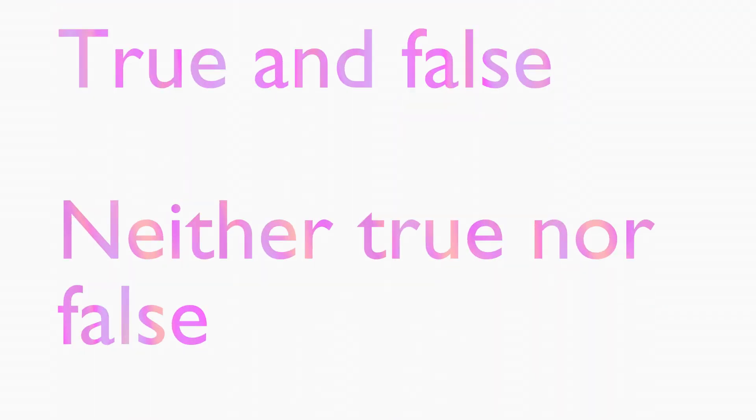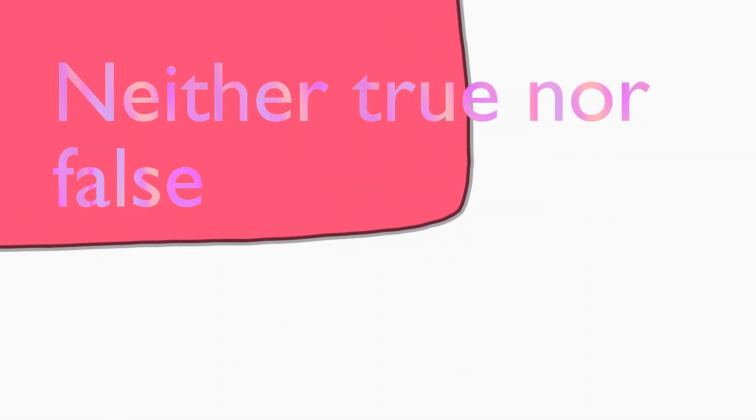So we can either say it's both true and false, or that it's neither true nor false, both of which are pretty crazy. It seems a tad less crazy to say that this sentence is neither true nor false, so let's run with that option.